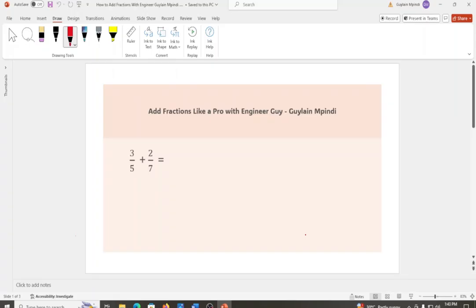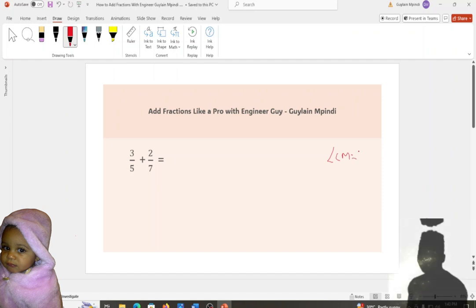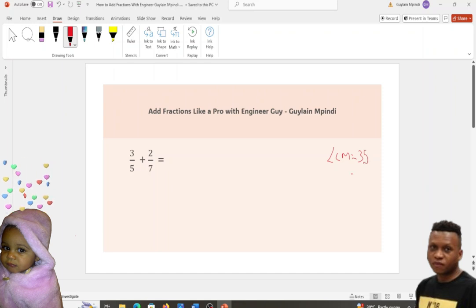So we need to find the LCM. LCM equal to 35. So how I end up finding this 35? This is how I did it.